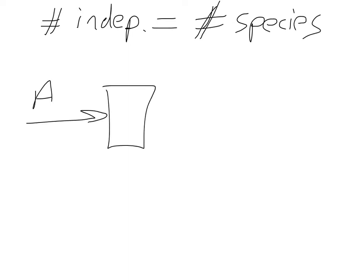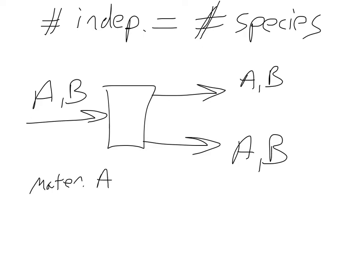So if we have here some process where we have A and B, we have A and B coming out the top and the bottom. This is a separations process. And we are separating out our material. We can write out here two different independent equations because we have two species A and B. We could write a material balance on A. We could write a material balance on B. Both of those would give us a set of equations or one equation that we could solve. Or we could write a total balance.